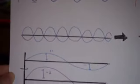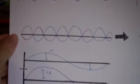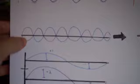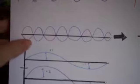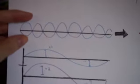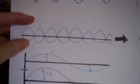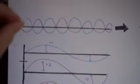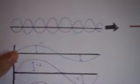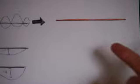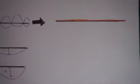For destructive interference, the crest of one wave and the trough of the other wave align. What happens is they destructively interfere, and in this case they cancel each other out, and you get no net wave.